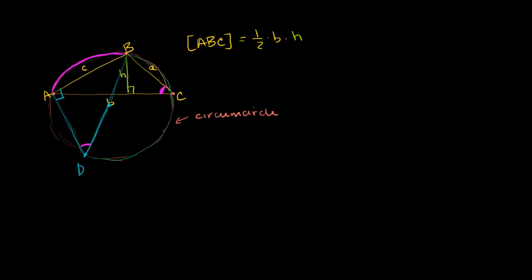Something interesting is popping up. We have two triangles here — triangle ABD and triangle BEC. They have two angles that are the same: a right angle and this magenta angle. So their third angle must also be the same. They have three angles that are the same, so they must be similar triangles, meaning the ratio between corresponding sides must be the same.